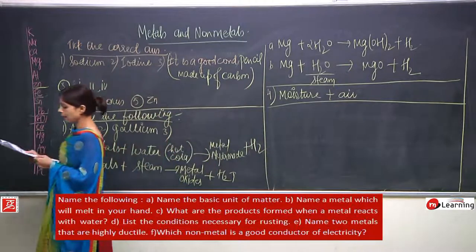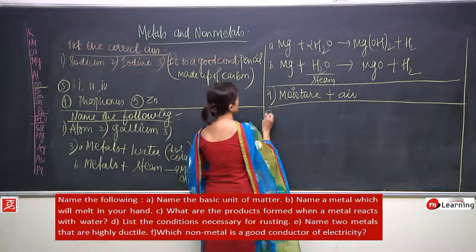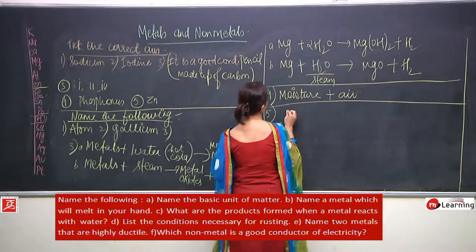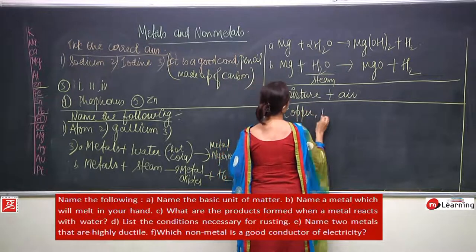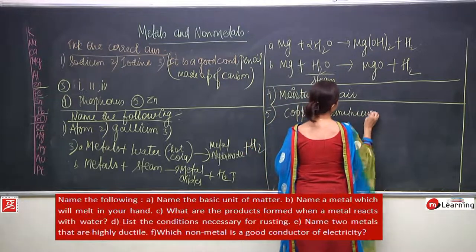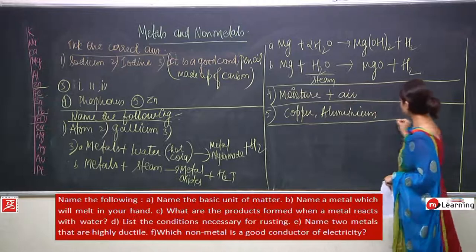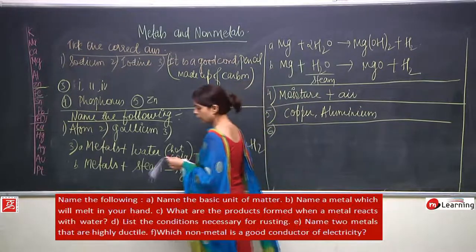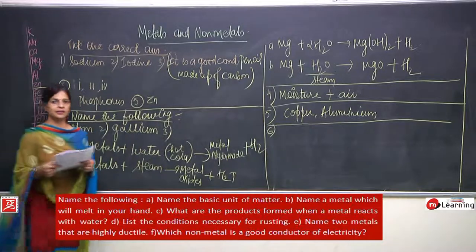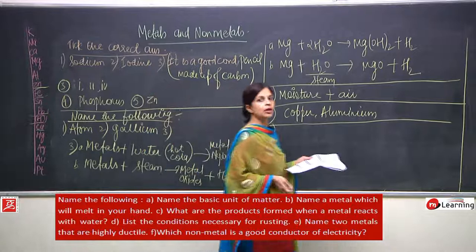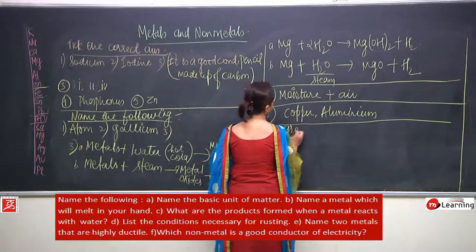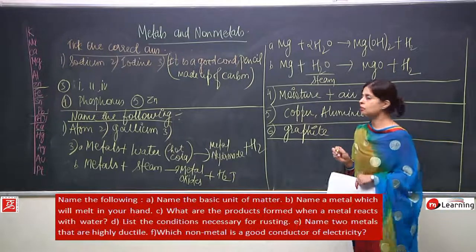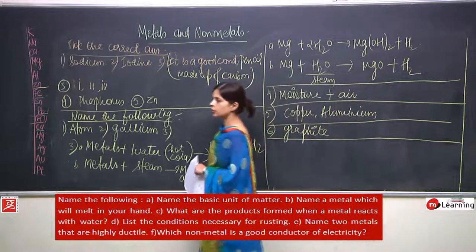Next: name two metals that are highly ductile. Copper is ductile, aluminium is ductile, silver is also ductile, but they have asked only for two. So we write copper and aluminium. Next: which non-metal is a good conductor of electricity? Graphite is a non-metal but it is used as electrodes because it is a very good conductor of electricity.